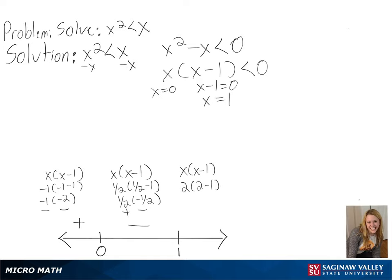For our solution, we need to find what is less than zero but not equal to zero, so our regions will not include zero or one, but it will be our negative region. So we get zero to one as our final answer.